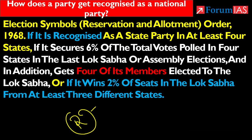The rules for recognizing national party and state party are governed by the Election Symbols (Reservation and Allotment) Order, Para 6B.